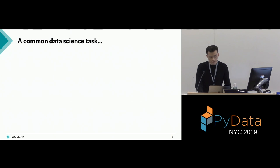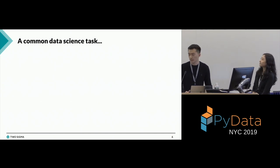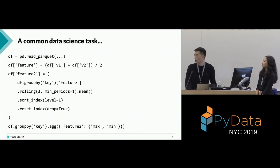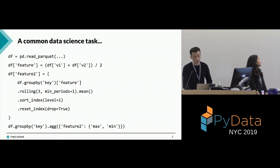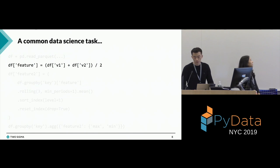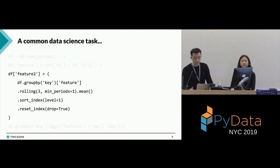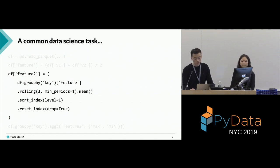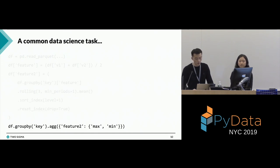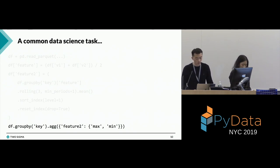So let's start the talk. I want to start with a common data science task. This is some pandas code and it should be pretty familiar to pandas users. We're doing three very basic things. First, we're taking two columns, taking the average, and assigning it to a new column. The second line performs a group-by rolling operation — takes a group-by key, takes a three-row rolling window, computes the mean and assigns it to a new column called feature two. And lastly, we're doing a pretty straightforward group-by aggregation.